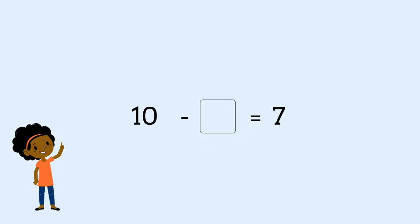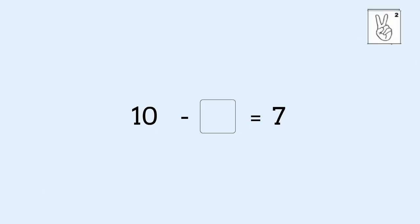By counting from seven to ten. Seven in my head, eight, nine, ten. This means the missing number is three. Ten take away three equals seven.